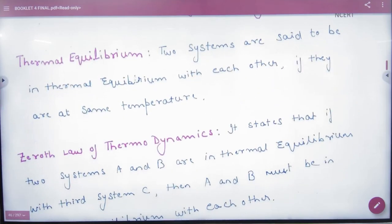This chapter starts from thermal equilibrium. Two systems are said to be in thermal equilibrium when their temperature is the same. If A and B systems have the same temperature, then they are in thermal equilibrium.